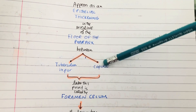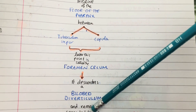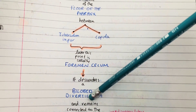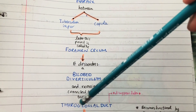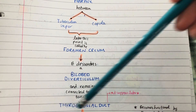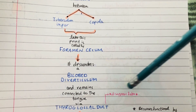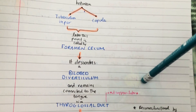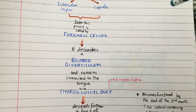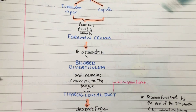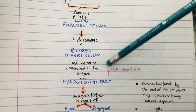The primitive thyroid descends as a bilobed diverticulum and it remains connected to the tongue via the thyroglossal duct, which disappears later normally. If that doesn't happen, there's going to be a problem, which we'll discuss in a few minutes.